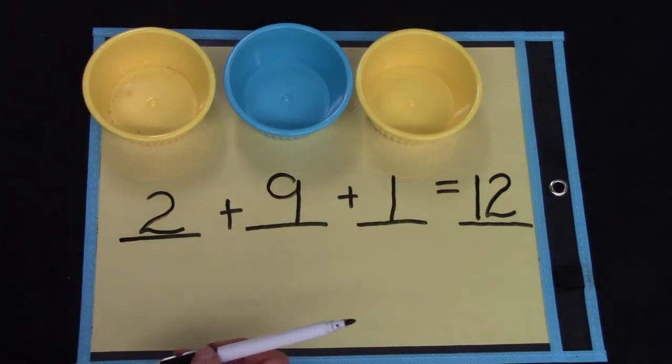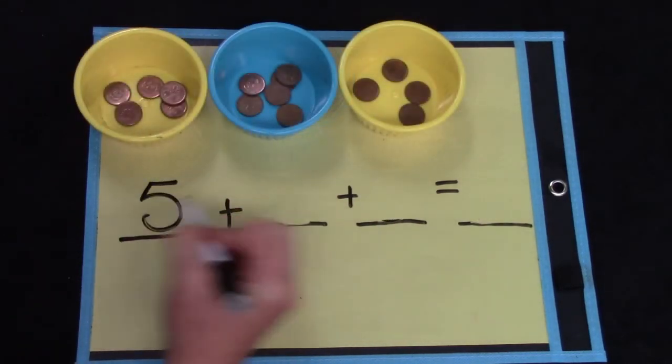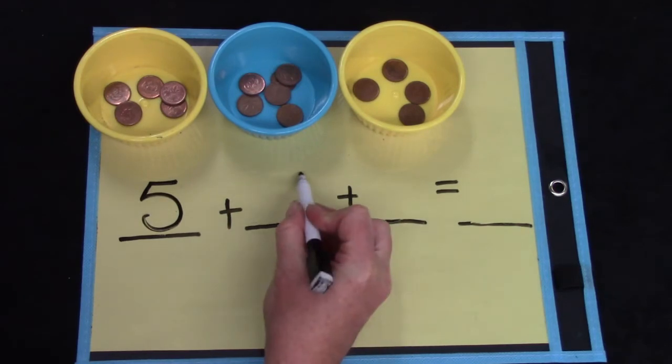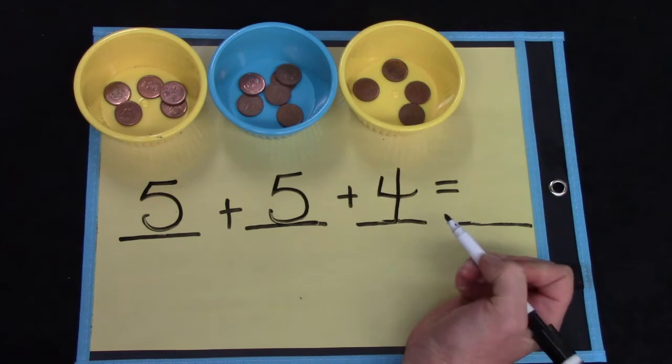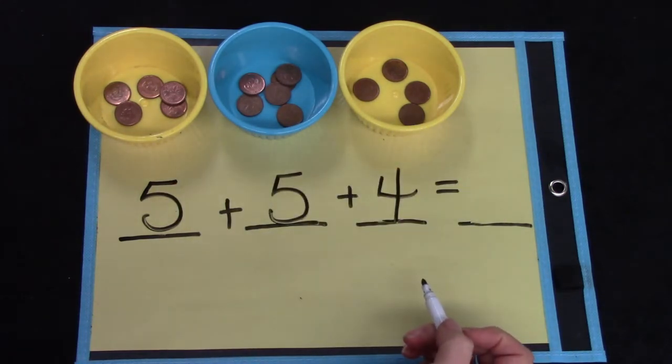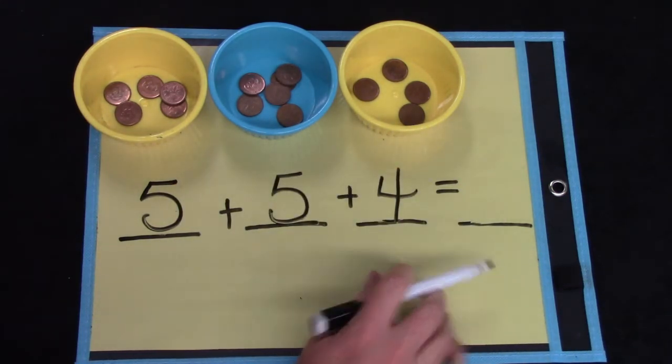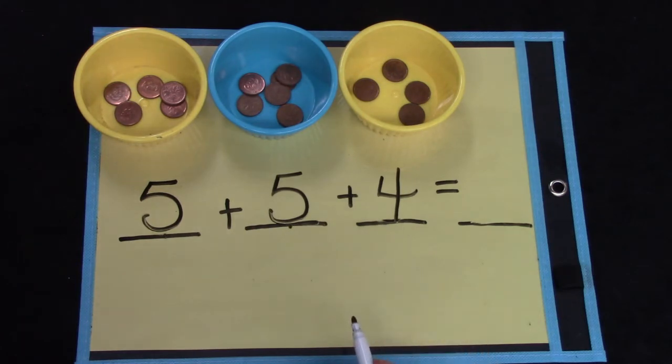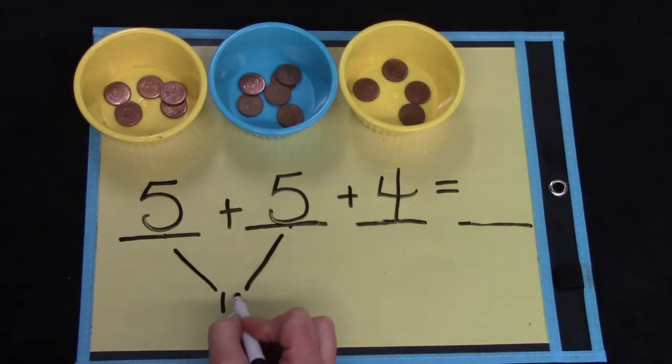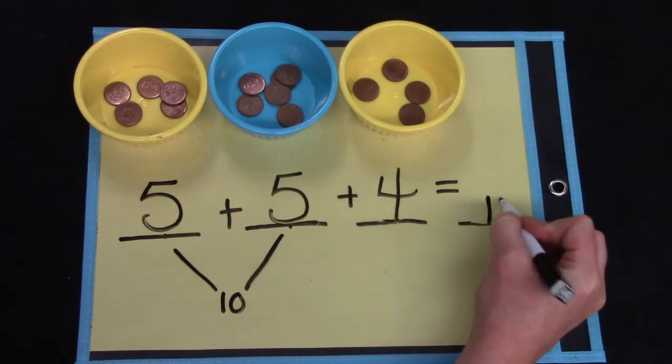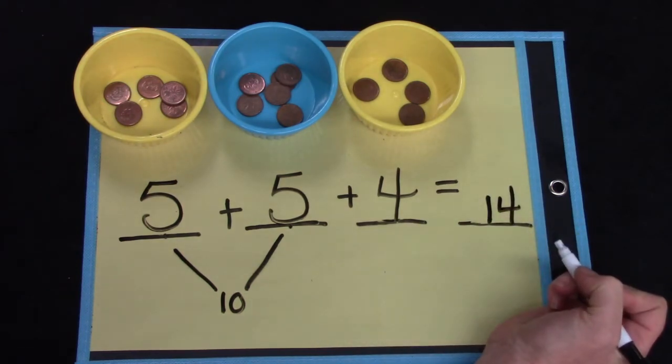Let's try this again. I have five plus five plus four. Well, we could count them all out, but I want you to look. Are there any numbers that go together? What about five plus five? Five plus five equals ten, and ten plus four is fourteen. This is fun!